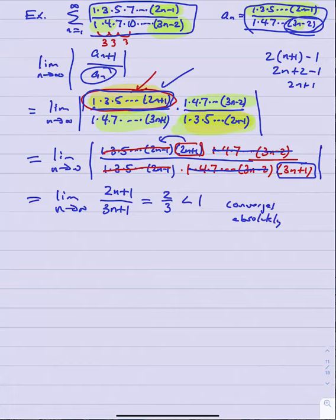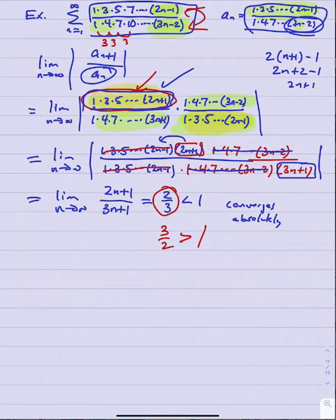Notice that if the numerator and denominator were flipped, the limit would be 3/2 > 1, and the series would diverge. In this case, with the limit of 2/3 < 1, the series converges absolutely. The ratio test is the right approach for these factorial-in-nature series.